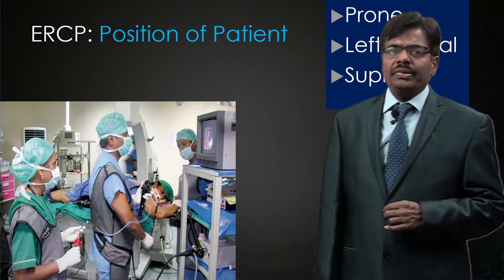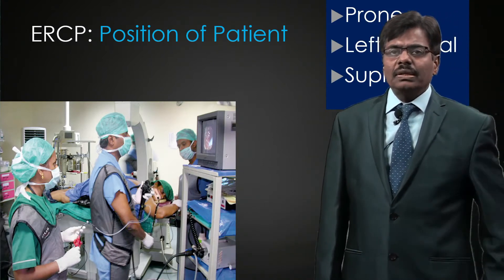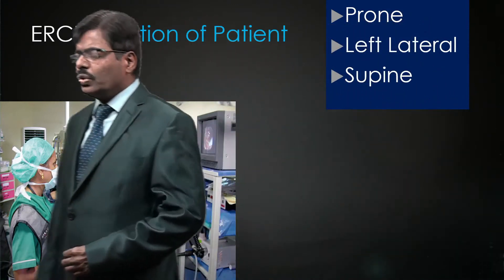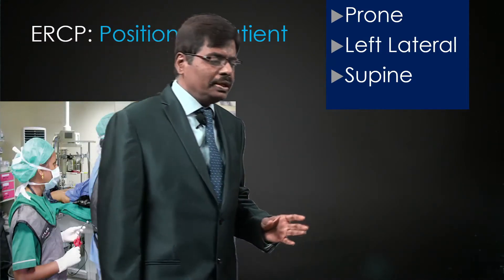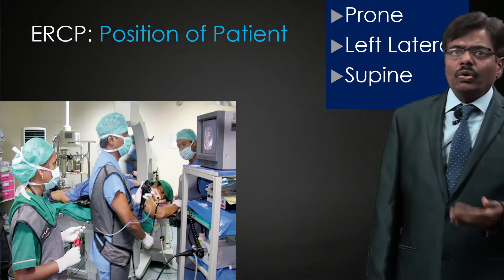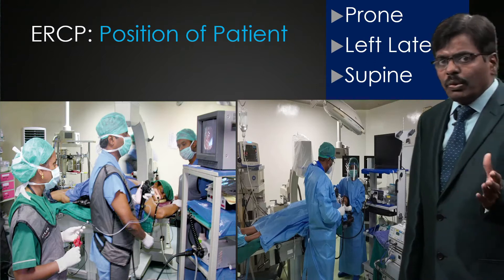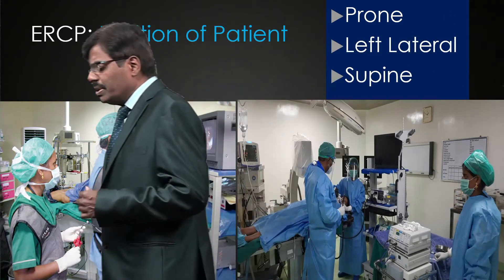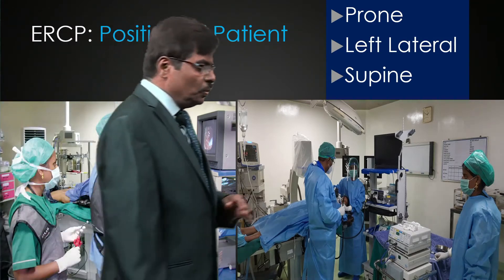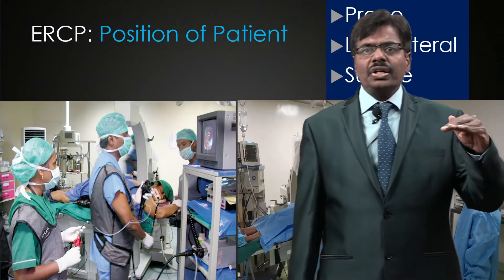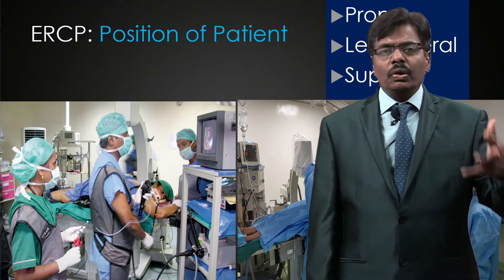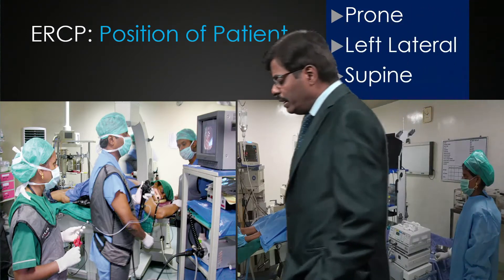This patient is prone — the commonest position we use. Left lateral is what we normally do for regular endoscopy, and supine is increasingly used especially when doing a single-stage procedure like laparoscopic cholecystectomy followed by ERCP. About 90% of procedures are done in prone position because scope retention in D2 is better and orientation is clearer, but you must be very careful about the patient's airway, especially when the patient is not intubated.